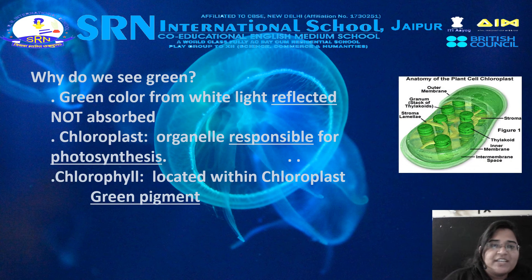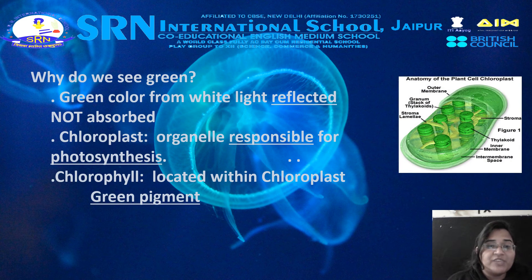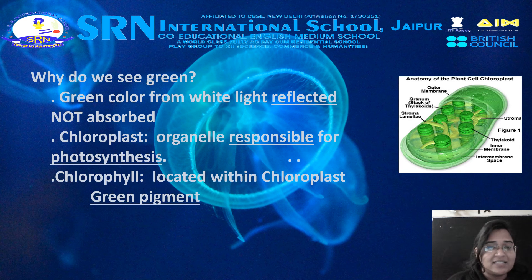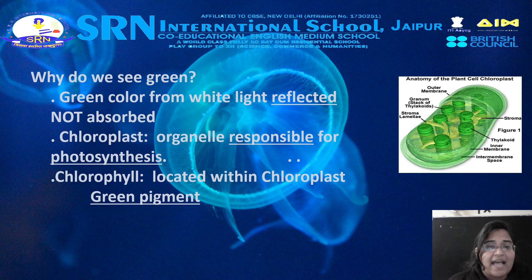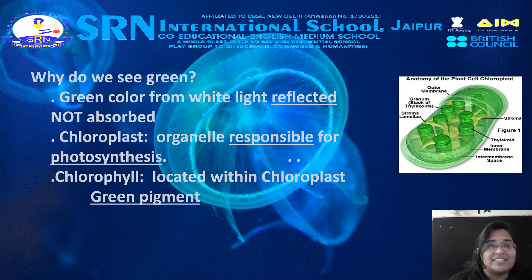Now the question is: why do we see green? Objects are perceived by humans as colored when the objects reflect light back to our eyes. All the other visible wavelengths of light are absorbed and we only see the reflected wavelengths. As such, plants look green because they absorb red light more efficiently and the green light is reflected.